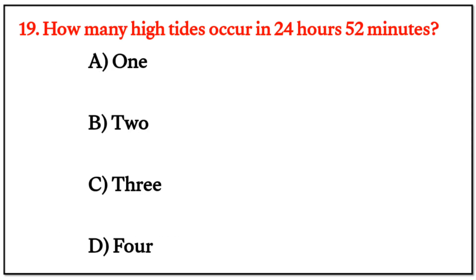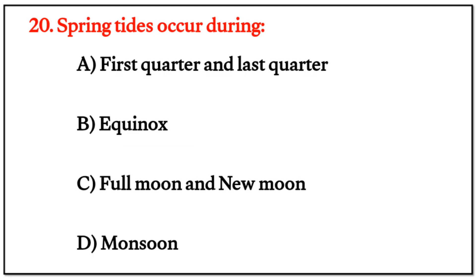MCQ Question 19: How many high tides occur in 24 hours 52 minutes? The right answer is B: 2. Question 20: Spring tides occur during the — options are given.